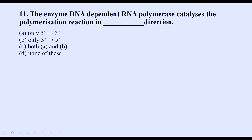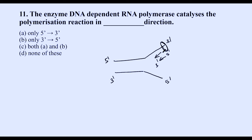Question eleven: the enzyme DNA-dependent RNA polymerase catalyzes polymerization. The DNA template is read 3' to 5', and the new strand is synthesized in the 5' to 3' direction. The correct option is A.